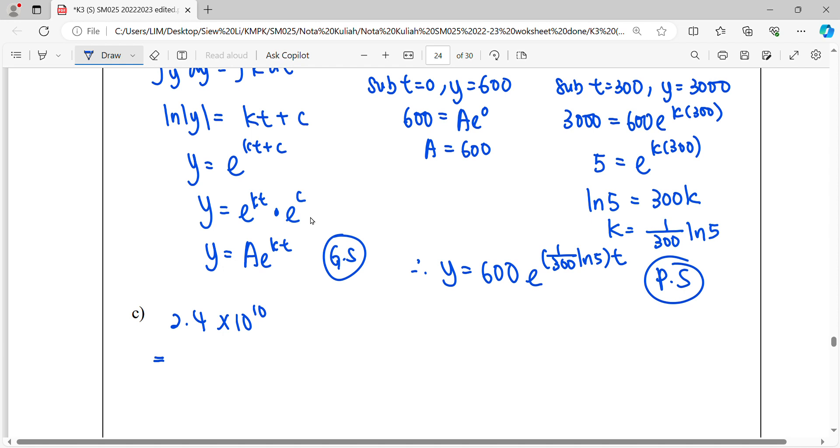So in million, it will be equal to 10 to the power of 6. For 10 to the power of 10, we separate it: 10 to the power of 4 times 10 to the power of 6.